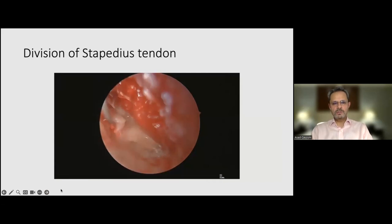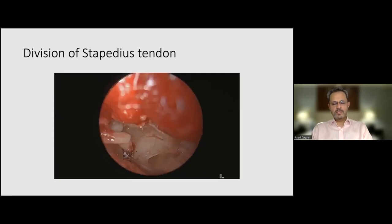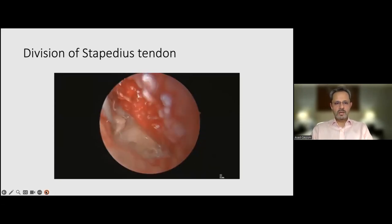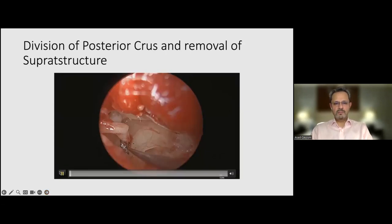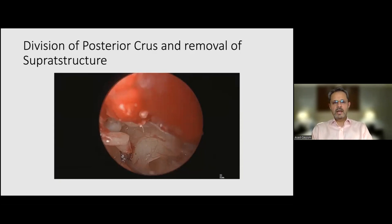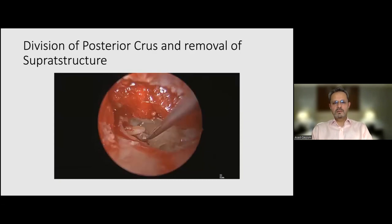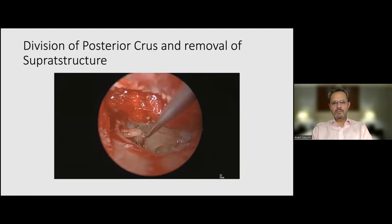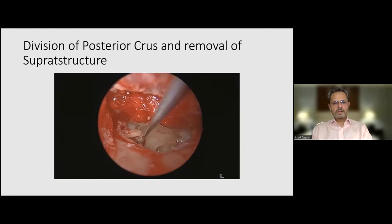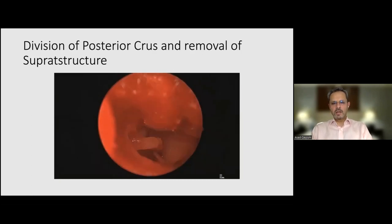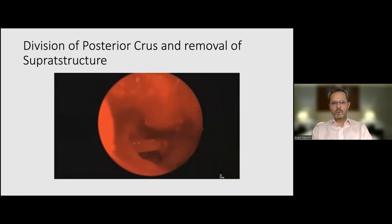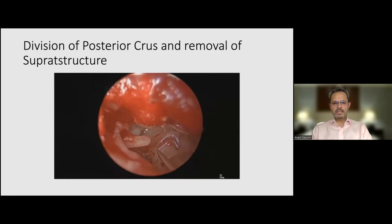I also use a laser to divide the stapedius tendon. Once divided, I can carefully see the posterior crus, then use the laser to further divide it. I then remove the posterior crus with a needle after dividing the incudostapedial joint, making sure I'm outside the capsule. I do not laser the anterior crus — a gentle push toward the promontory allows the suprastructure to fracture away and come out in total and be completely and safely removed.